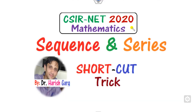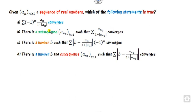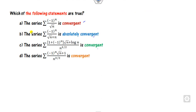Hello everyone, welcome to the next lecture on CSNA 2020 mathematics. Today we will discuss questions related to sequence and series with some shortcut tricks. The first question is related to convergent and absolute convergent. The second is related to convergence based on subsequences. The last one is whether a series is uniformly convergent or not, and the concept behind each.